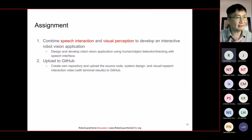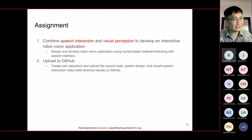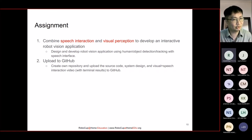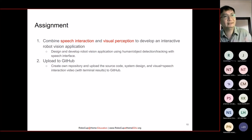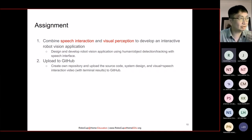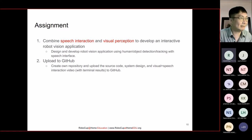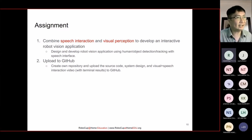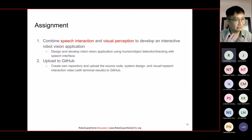For the assignment, I hope you can combine the speech interaction we learned last week with the visual perception from this week to create an interactive robot vision application. For example, design and develop a robot vision application using human or object detection and tracking with a speech interface. When your robot detects someone, it can say 'good morning' or 'hello, how are you?' With face recognition, it can even say the person's name — 'good morning, Max.' You can design a robot for a hotel receptionist counter, shops, libraries, or retail stores to interact with customers using both face and speech interaction.